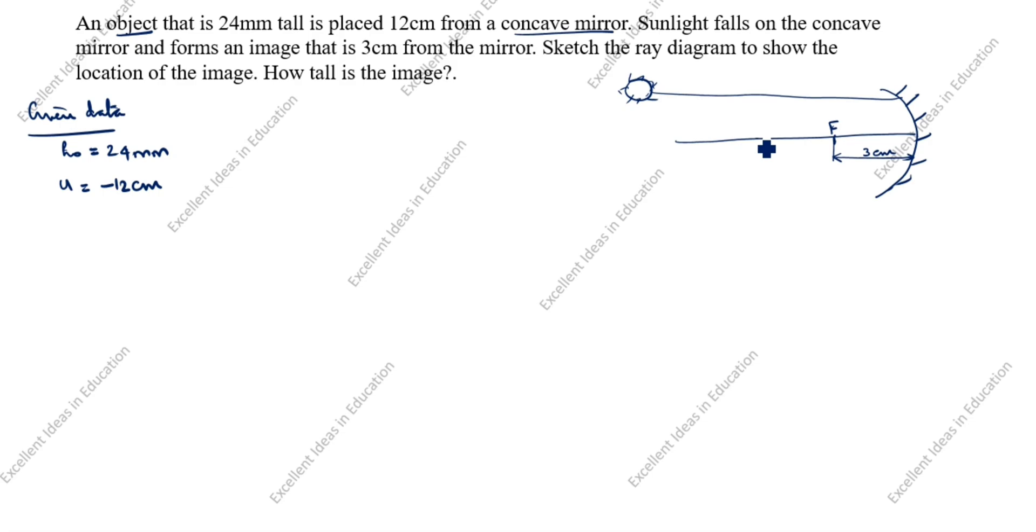This is F. This is F means radius of curvature is double. Double of 3 means this one comes to 6 cm. What is given: U is equal to minus 12 cm. Minus is this side, negative side. U comes here, this is 12 cm. Height of the object is given as 24 mm.